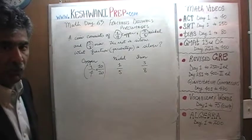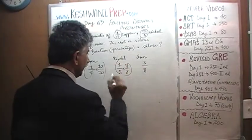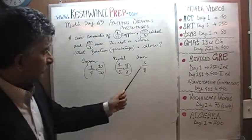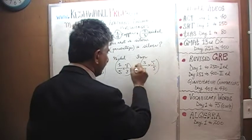We have one fifth here. We need 40 at the bottom. Let's multiply top and bottom by 8. We have three eighths here. We need 40 at the bottom. Let's multiply top and bottom by 5. That takes care of that part.